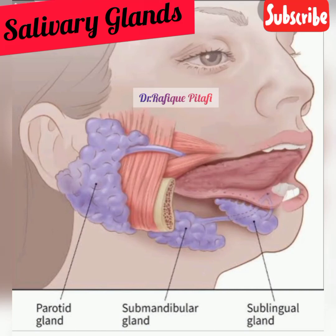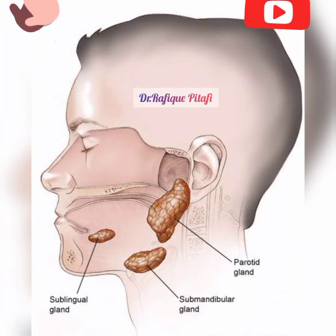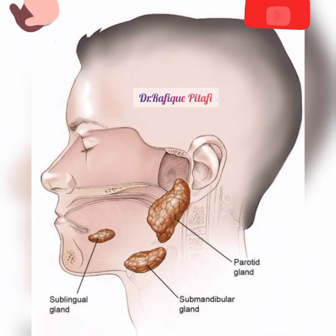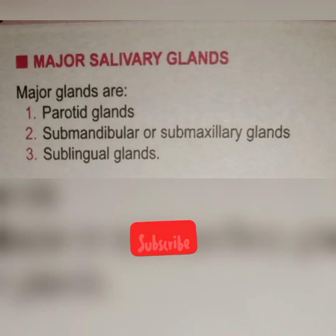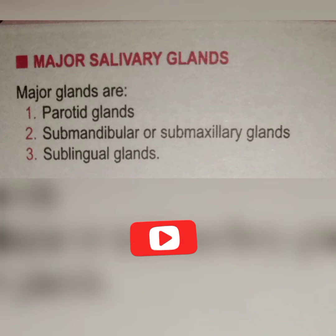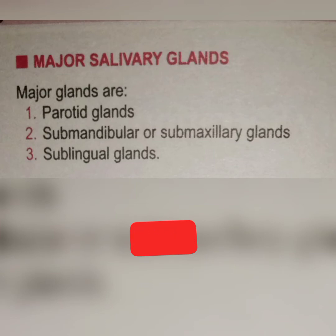Assalamualaikum, Dr. Rafiq Pitafi here with another topic: salivary glands. Salivary glands are the special glands that release saliva in our mouth. There are three main salivary glands: the parotid, submandibular, and sublingual glands. These are the glands especially responsible for the secretions of saliva, situated in your mouth at different positions.